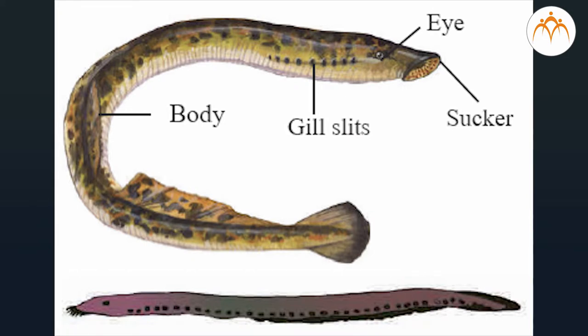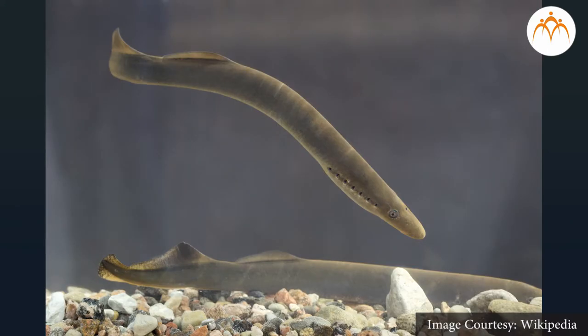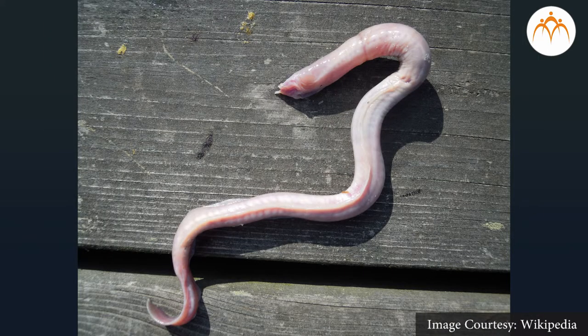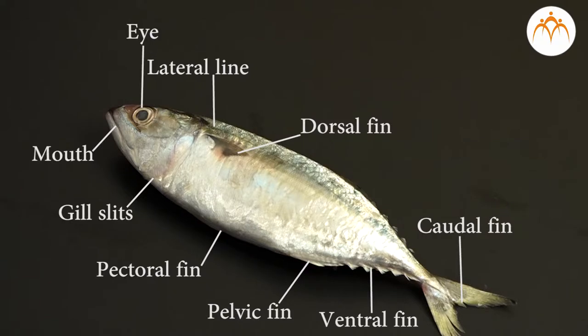Class Cyclostomata: these animals have a jawless mouth provided with a sucker. Their skin is soft and without any scale. Paired appendages are absent. Endoskeleton is cartilaginous. Most of the animals are ectoparasites. Examples: Petromyzon, Myxine, etc.